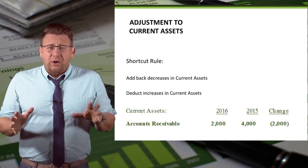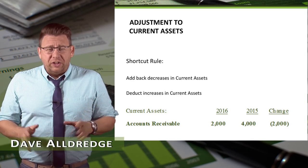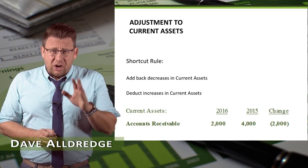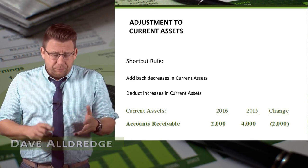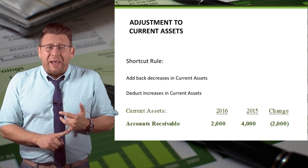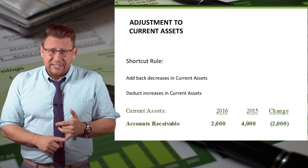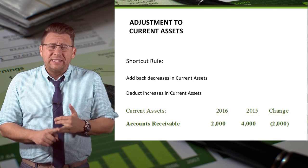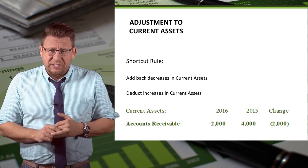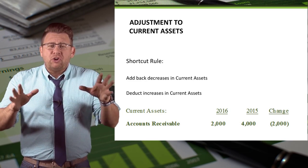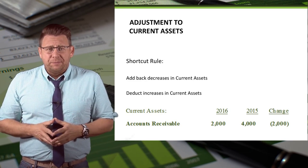Our shortcut rule for treating changes in current assets is as follows: we add back decreases in current assets and we deduct increases in current assets. Let me show you why that is.